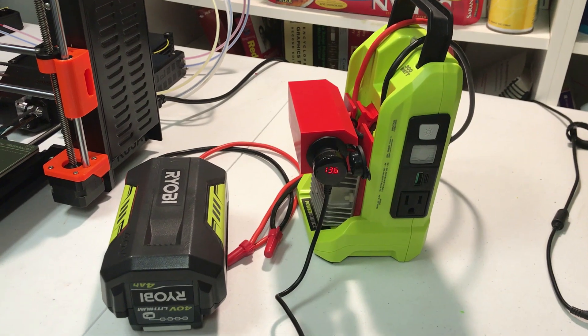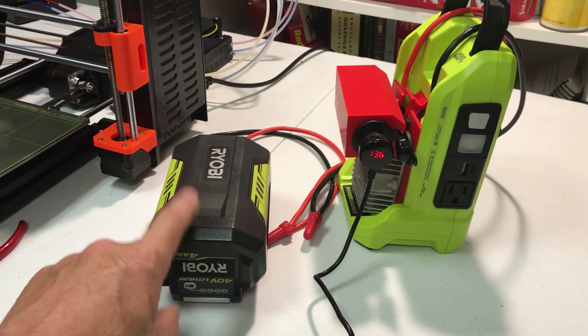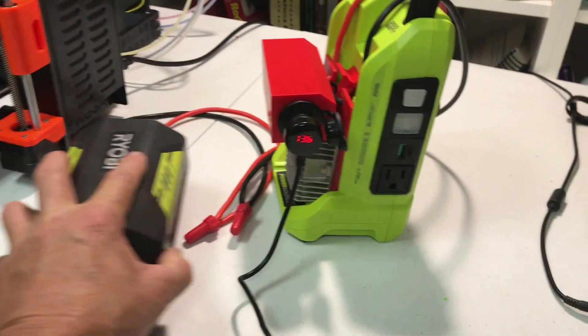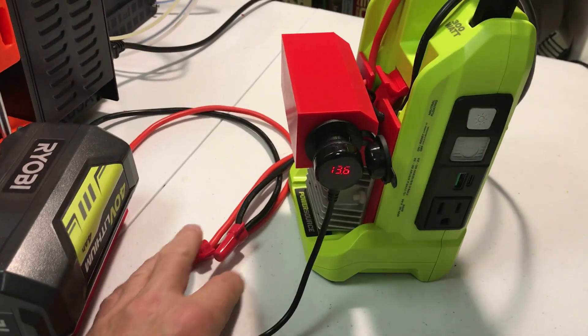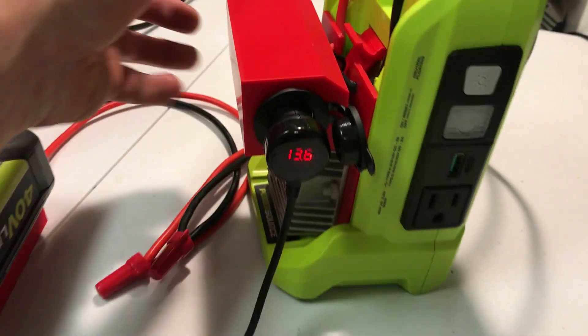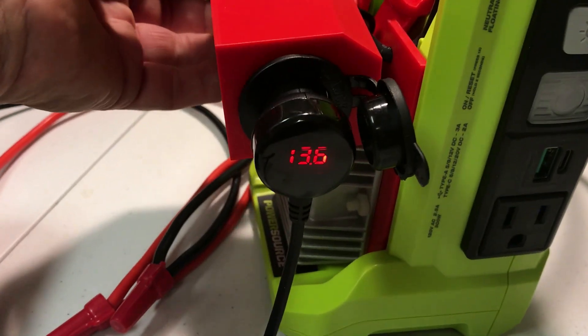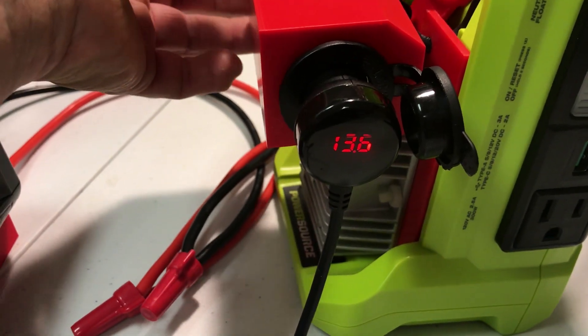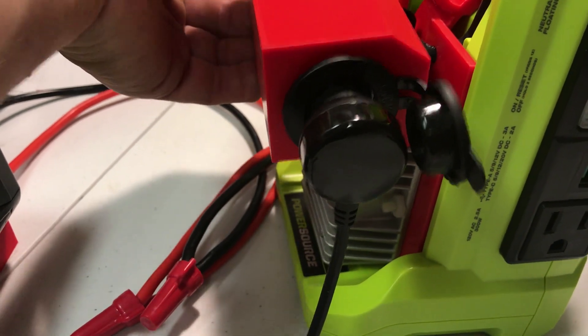Before I button everything up I'm just testing with the 40 volt battery which is connected to the input wires and you can see that I'm getting 13.8 volts and the on off switch is working.